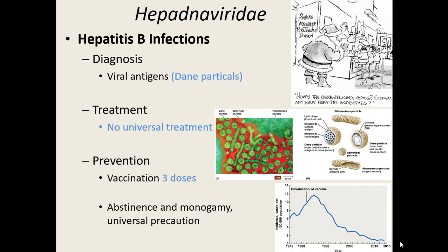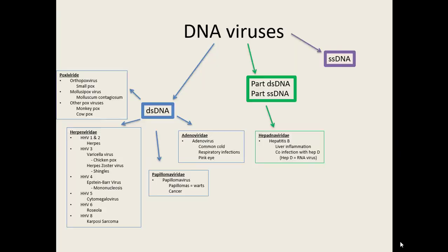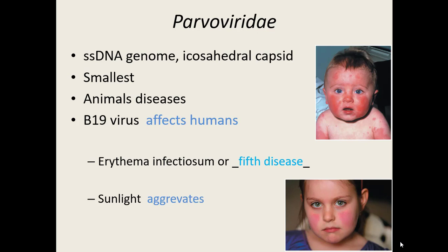Finally, our last DNA family is made up of single-stranded DNA. There's only one single-stranded DNA virus that affects humans: the parvoviridae family. Of all viruses in the parvoviridae group, there are quite a few animal viruses. Size-wise, they're the smallest of DNA viruses. The one that is pathogenic to humans is the B19 virus, which causes a condition called erythema infectiosum — erythema means red — essentially a reddening of the skin.